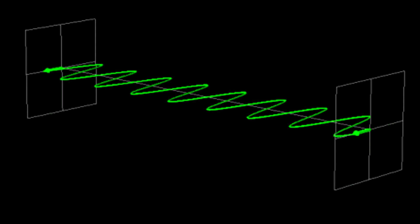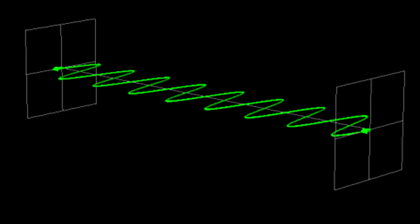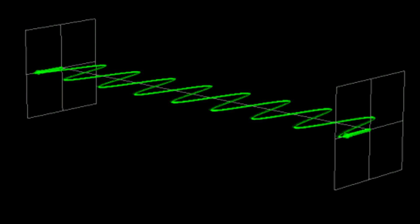This animation shows a horizontally oriented linearly polarized wave. It's horizontally oriented because it goes side to side.